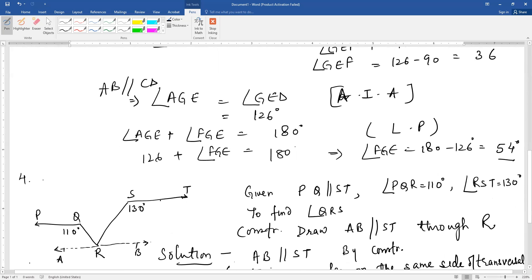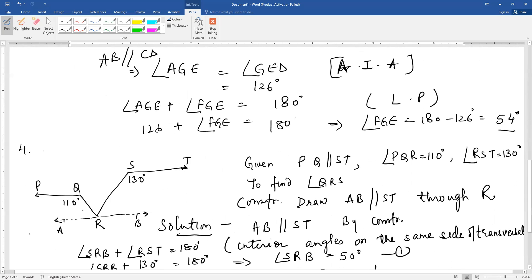Now let us discuss question number 4. You are given the figure where PQ is parallel to ST, angle PQR is 110 degrees, angle RST is 130 degrees, and you need to find angle QRS.